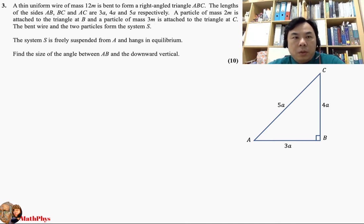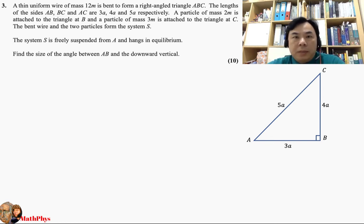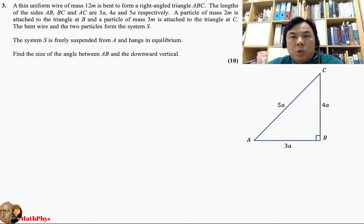Now the question sounds like this. A thin uniform wire of mass 12M is bent to form a right-angled triangle ABC. The lengths of sides AB, BC, and AC are given as 3A, 4A, and 5A respectively. A particle of mass 2M is attached to the triangle at B, and another particle of mass 3M is attached to the triangle at C. The bent wire and the two particles form the system S, which is freely suspended from A and hangs in equilibrium.